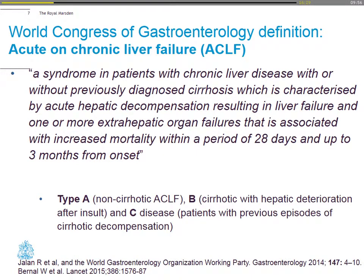It's now seen as a spectrum of disease rather than a single entity, with type A where you have non-cirrhotic acute-on-chronic liver failure, type B where you have cirrhotic with hepatic deterioration, and type C disease where you have multiple episodes of cirrhotic decompensation. They've redefined acute-on-chronic liver failure in this way.